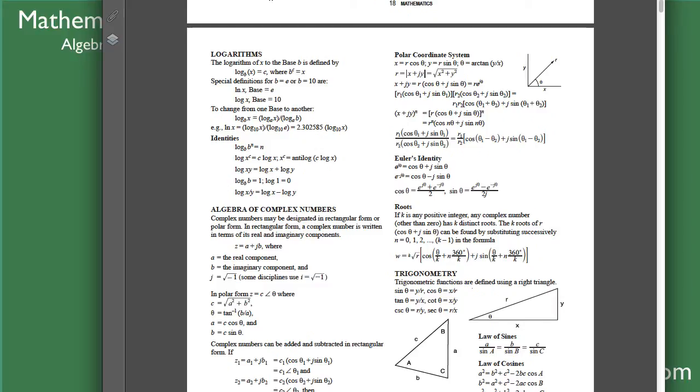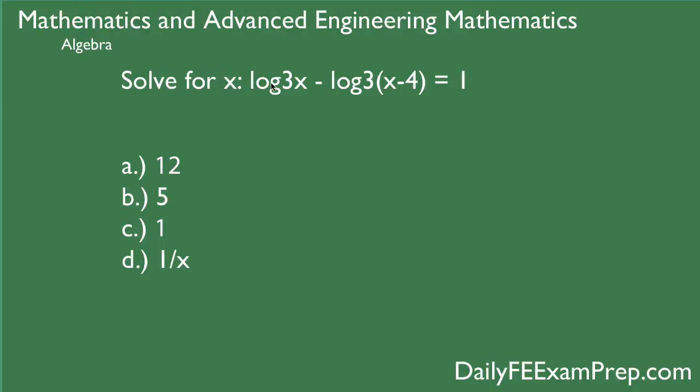Okay so here we are on page 19 of the NCEES supplied reference handbook and we are going to be using a couple of these properties. The first one that we are going to be using is this identity, this last identity right here, so log of x to the y with some base is equal to log of x minus log of y if they have the same base.